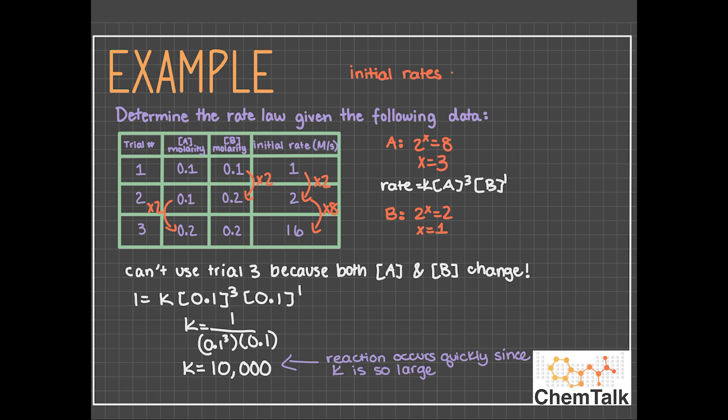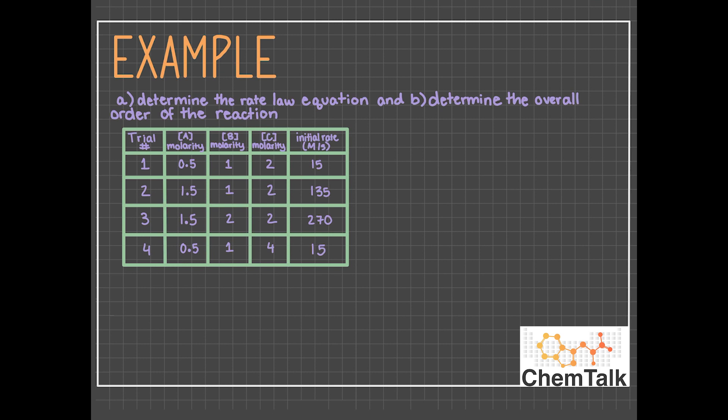This method that we just used to solve this problem is known as the initial rates method. Let's take a look at this problem next. It asks us to A, determine the rate law of the equation, and B, determine the overall order.